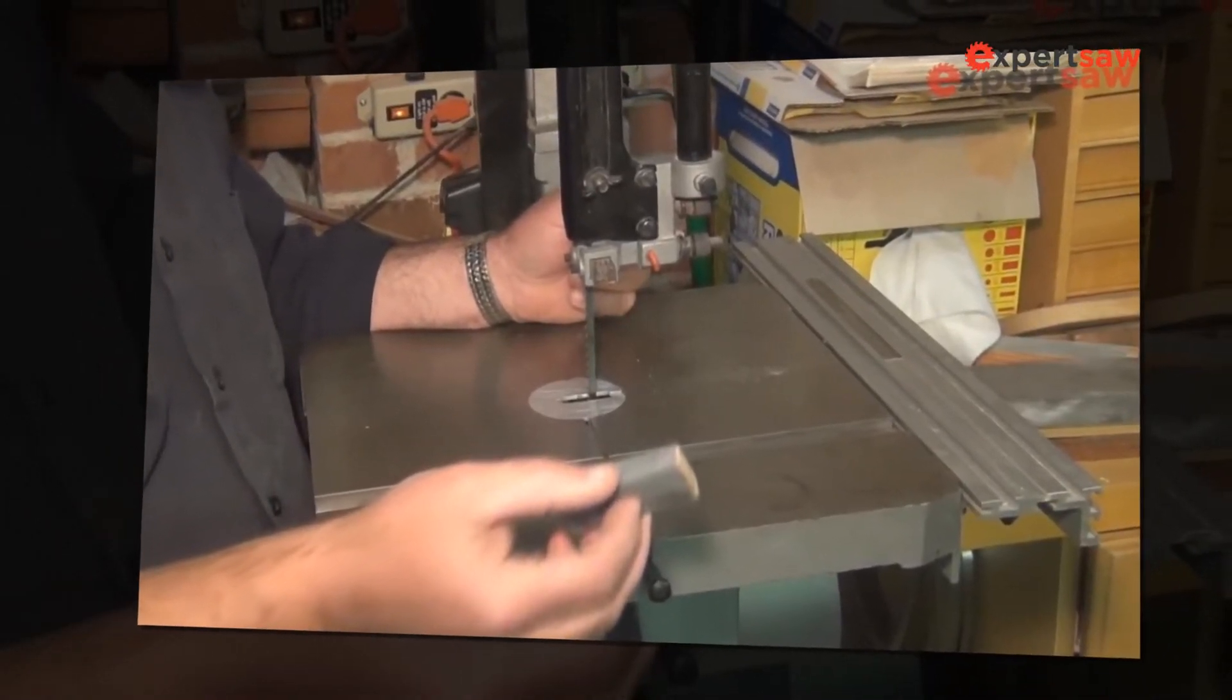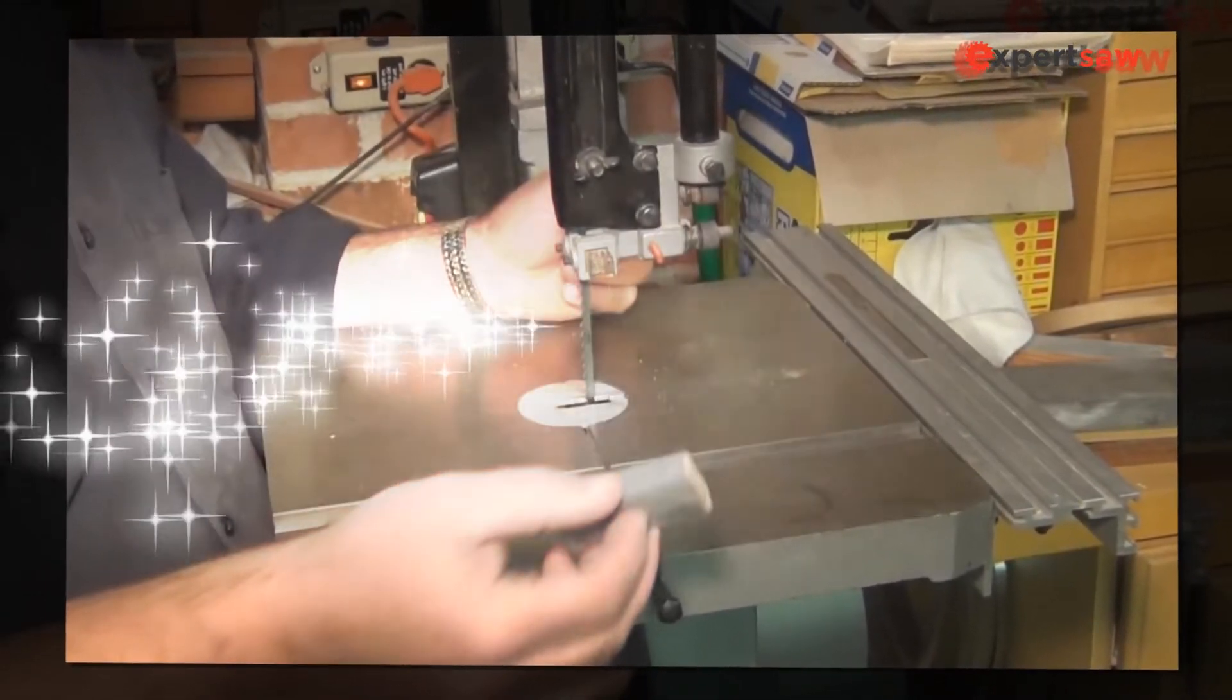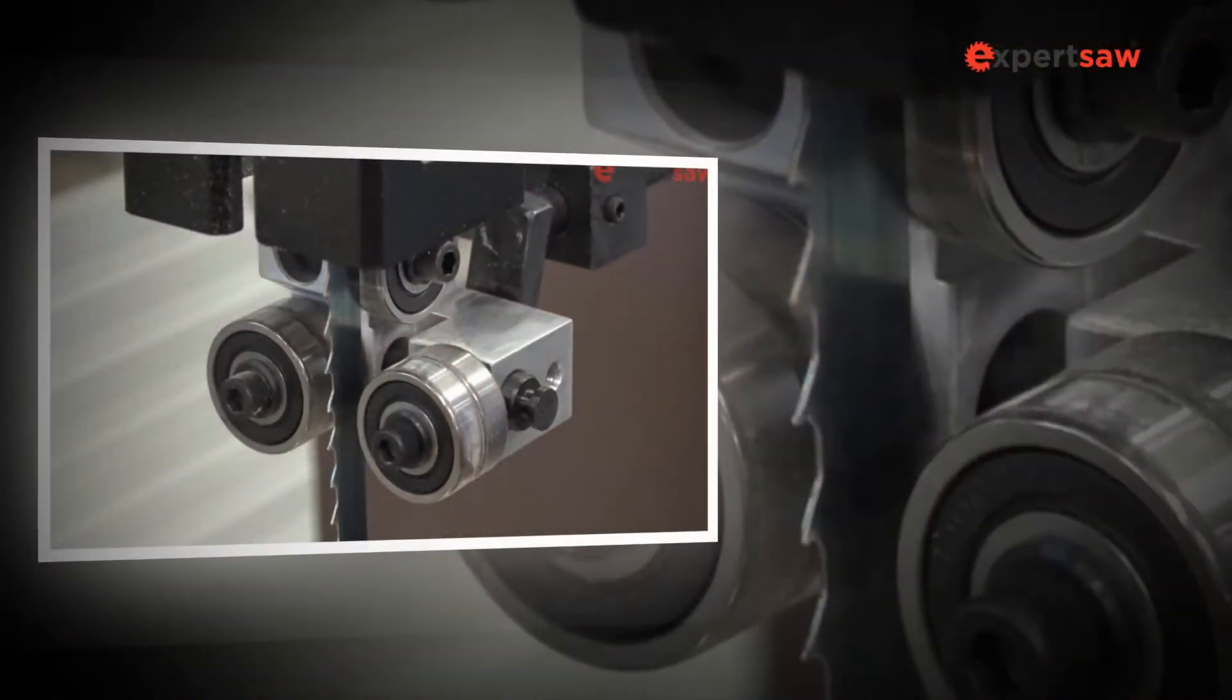Sometimes there will also be a pneumatic machine set close to the kerf, the path of the cut, to overwhelm chips for better visibility.